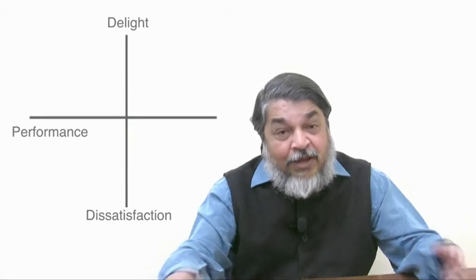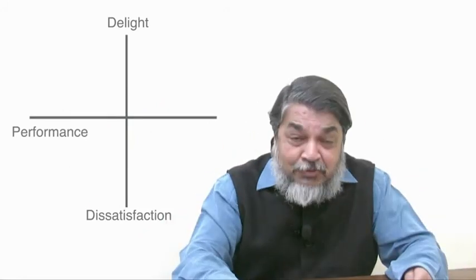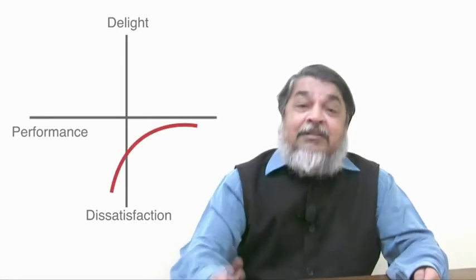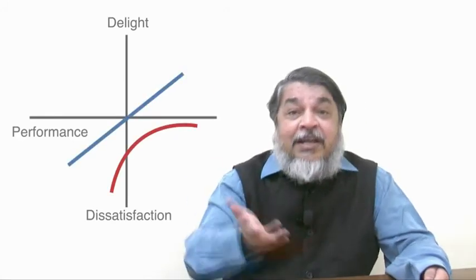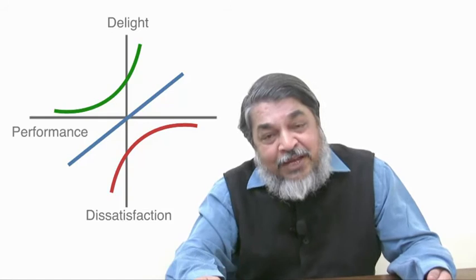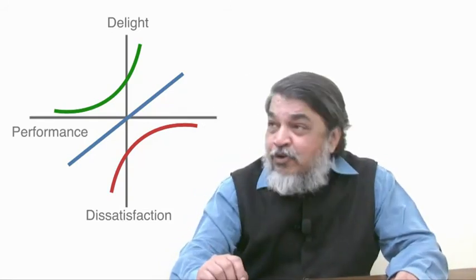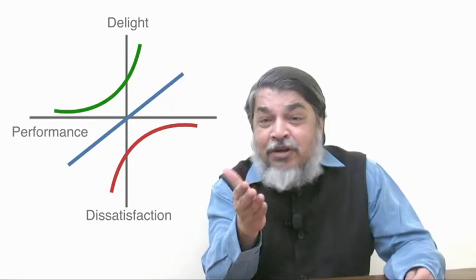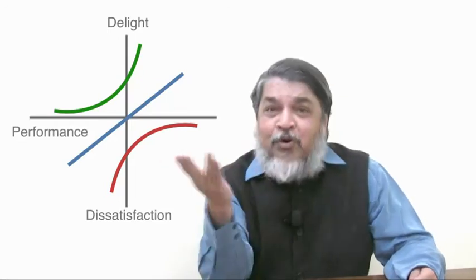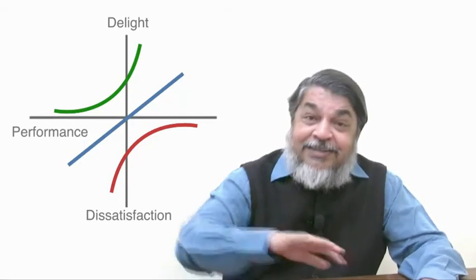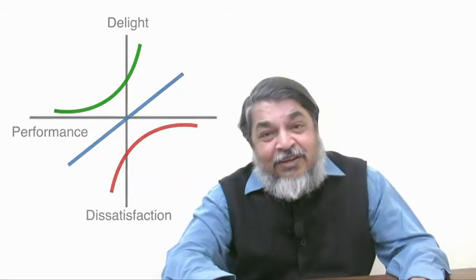So we have a two-dimensional quality space in which there are must-be attributes, continuous attributes, and delight attributes. On must-be attributes, you must cross the must-be threshold and stop. On delight attributes, you must cross the delight threshold and do a bit more so that customers are loyal. On continuous attributes, the more you deliver, the merrier. This is a major insight for having a cost-effective quality improvement program that generates customer loyalty.